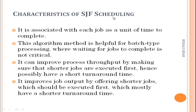Characteristics of SJF scheduling algorithm: each job is associated with a unit of time to complete. This algorithm is helpful for batch-type processing where waiting for a job to complete is not critical. It improves process throughput by ensuring the shortest jobs are executed first, hence possibly having the shortest turnaround time. It improves job output by offering the shortest jobs first, which mostly results in the shortest turnaround time.